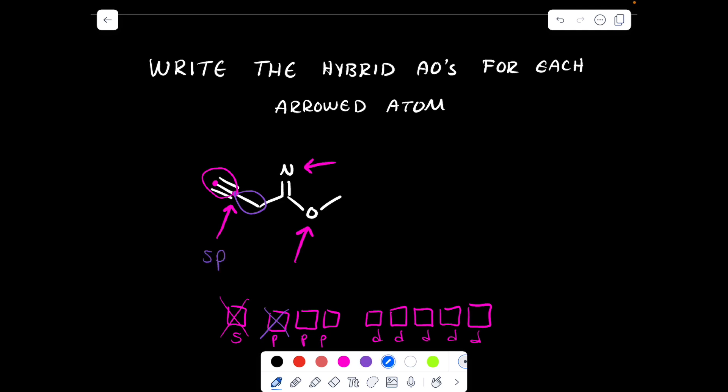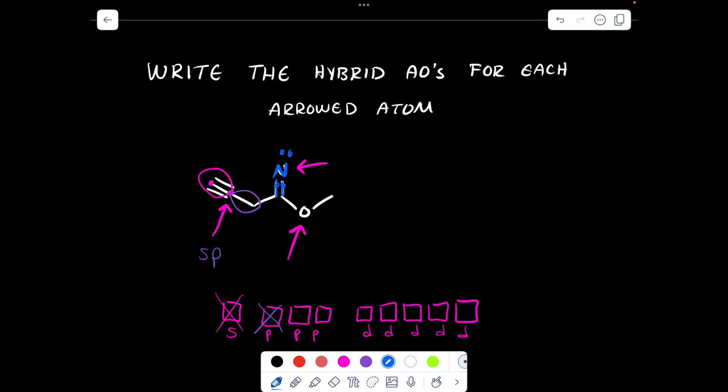So we must fill in the lone pairs for the next atom, so the nitrogen. Right now it has one, two electrons, so here it must have two more electrons. It has a lone pair, and it also must be bonded to an H.